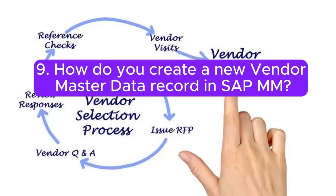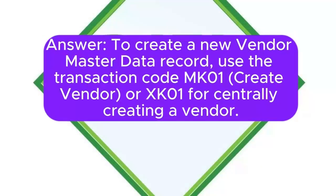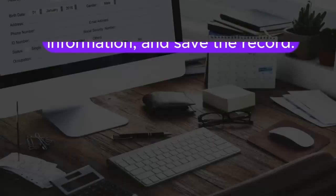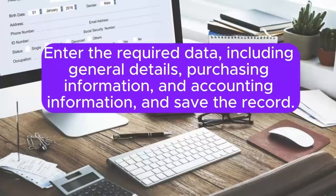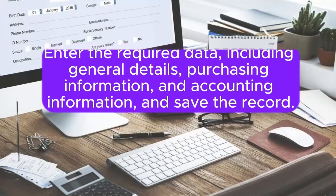9. How do you create a new Vendor Master Data record in SAP MM? Answer: To create a new Vendor Master Data record, use the transaction code MK01 (Create Vendor) or XK01 for centrally creating a vendor. Enter the required data, including general details, purchasing information and accounting information, and save the record.